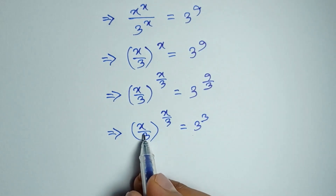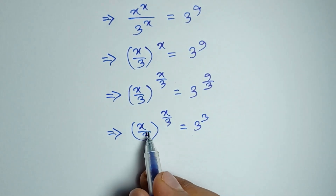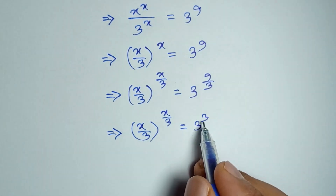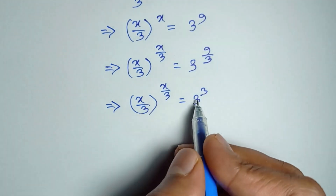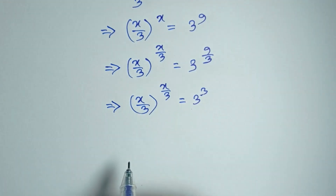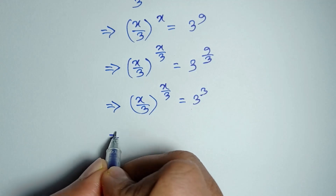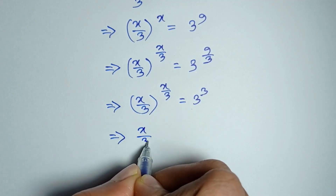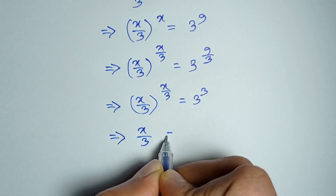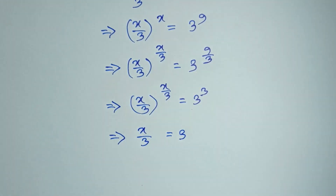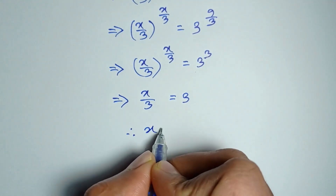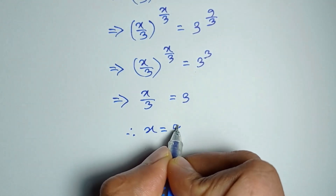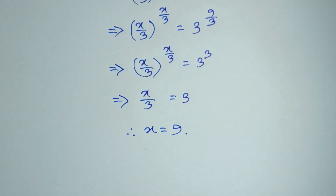Here, the left side base and power are equal, and the right side base and power are equal. Comparing left side and right side, we can write x/3 is equal to 3. So x is equal to 9. Here is the solution. Thanks for watching, see you guys.